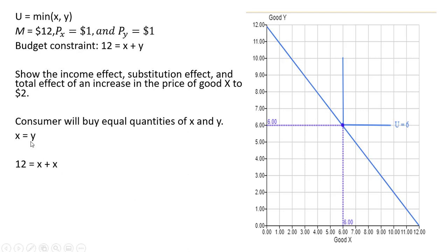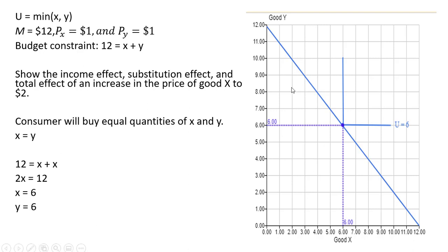We're going to make a substitution where we have y in the budget constraint. Since x equals y, we're going to replace that with an x. So now we have 12 equals x plus x. Adding up the x's and then dividing by 2, the consumer will buy 6 units of good x. And since x equals y, the consumer will buy 6 units of y.